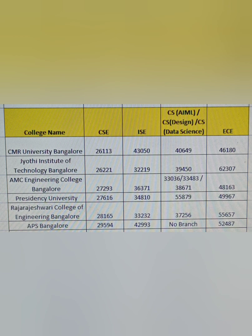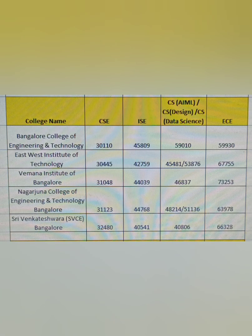Further colleges like Rajrajeshwari and APS — I've made video reviews for both — have CSE under 30,000. You can see many computer science options up to 55,000 in the case of Presidency, and around 40,000 for most colleges. ECE goes up to 55,000–62,000 as seen on the sheet. For ranks beyond 30,000: Bangalore College of Engineering and Technology has CSE at 30,000, East-West at 30,000, Vemana at 31,000, Nagarjuna at 31,000, and Sree Venkateshwara at 32,000. Five colleges with CSE closing between 30,000–32,000. ISE closes between 40,000–45,000, and computer science specializations are available up to 59,000.